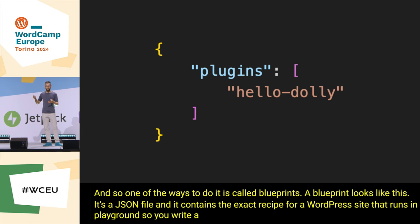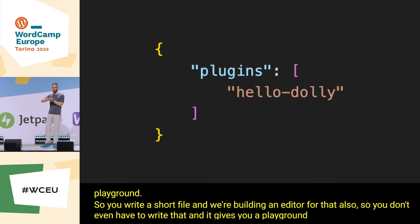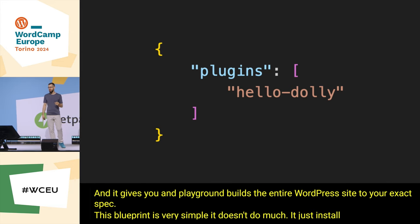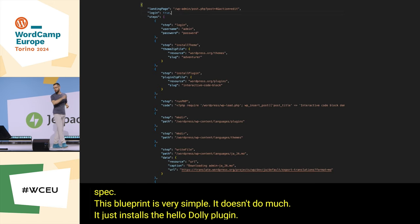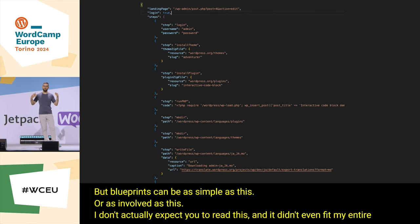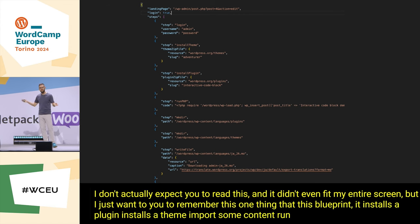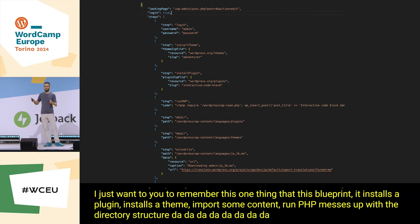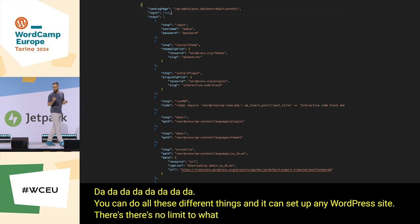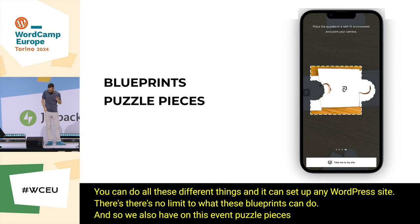You write a short file — and we're also building an editor so you don't even have to write it manually — and playground builds the entire WordPress site to your exact spec. A blueprint can be very simple, like just installing the Hello Dolly plugin, or as involved as installing a plugin, installing a theme, importing content, running PHP, adjusting the directory structure, and more. There's no limit to what blueprints can do. We also have physical puzzle pieces at the sponsors' booth here at this event.